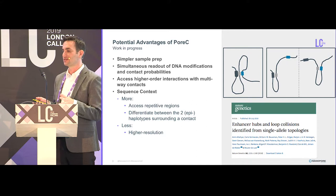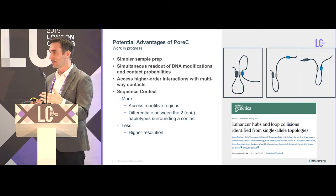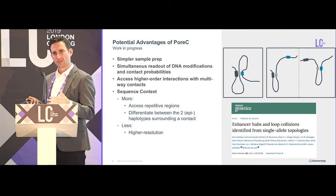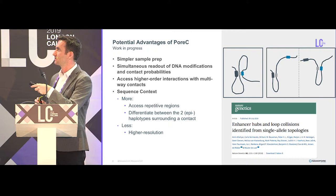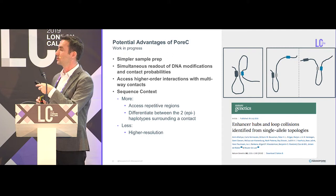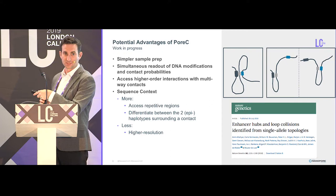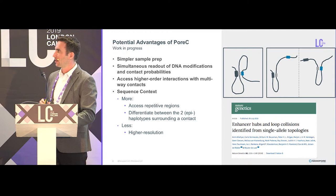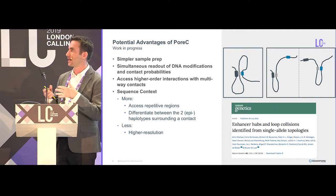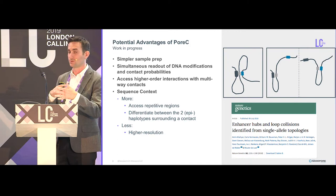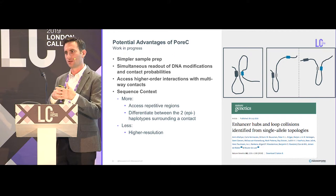What are the potential advantages of Pore-C? One is simpler sample prep. If we can get away without doing PCR, we should be able to get a simultaneous readout of DNA modifications and contact probabilities, which is very interesting in terms of gene expression. We'll be able to access higher-order interactions with multiway contacts — in a regular prep you might not be able to distinguish between all three sites interacting at once versus two mutually exclusive pairwise interactions. You should really read the MC4C paper to understand why that's important in biology. Depending on the restriction enzyme used, you can dial up and down the amount of sequence context per contact — more context lets you access repetitive regions and potentially get haplotype information, distinguishing between two different alleles.